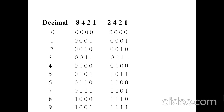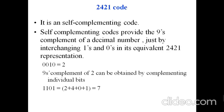For decimal seven, 8421 is 0111, while in 2421 it is 1101. For decimal eight, 8421 is 1000 and 2421 is 1110. For decimal nine, 8421 is 1001, but in 2421 the sum of all weights equals nine, so all bits are one — that is, 1111. This completes the 2421 code table.